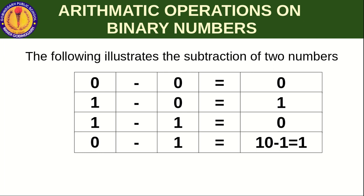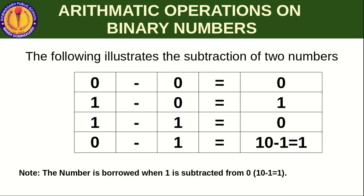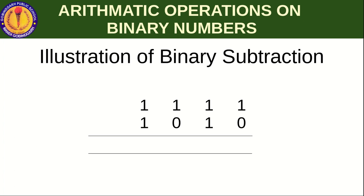When we take a borrow from the next term, that zero becomes 1 0. And 1 0 in binary is 2, and 2 minus 1 is equal to 1. So zero minus one equals 1, but you must take a borrow. Remember: when 1 is subtracted from 0, a borrow is taken, that 0 becomes 1 0, and 1 0 minus 1 equals 1.